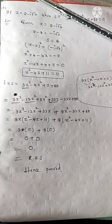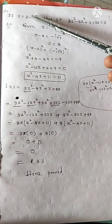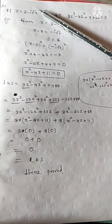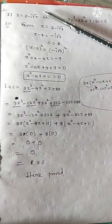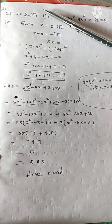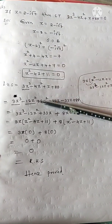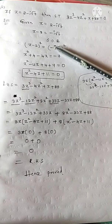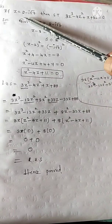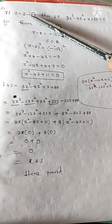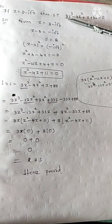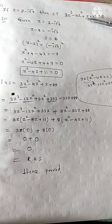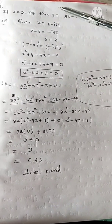My dear students, the 4 marks question — the first question will be explained to you. The second question will be very doubtful, so I am explaining this solution. Observe once. z equal to 2 minus i root 7. Then show that 3z cube minus 4z square plus z plus 88 equal to 0.